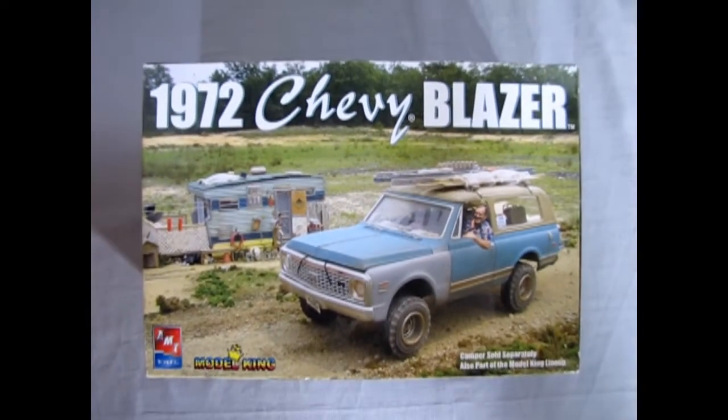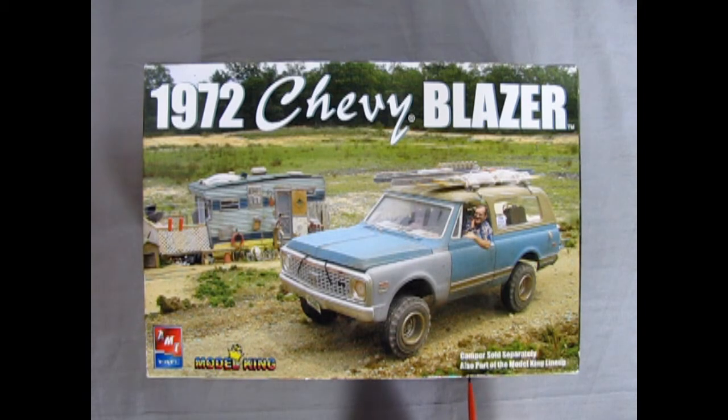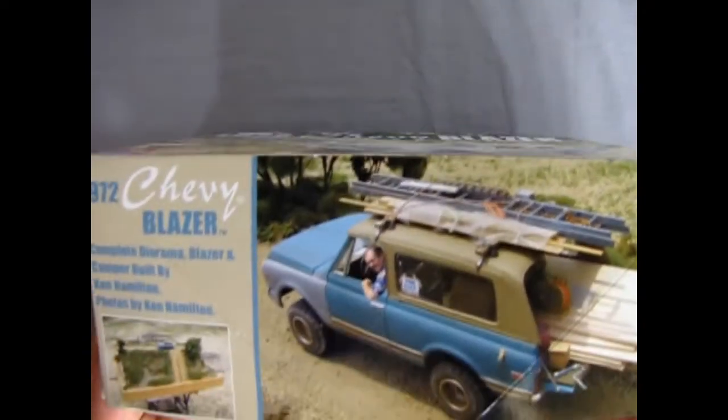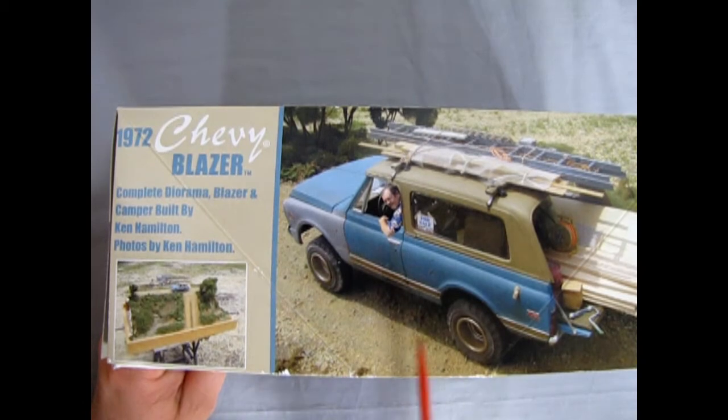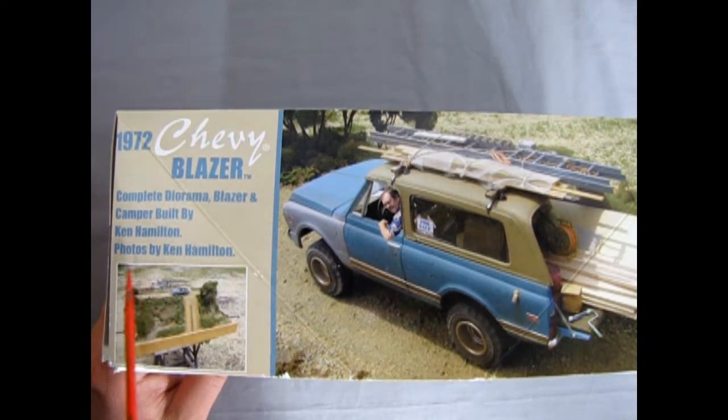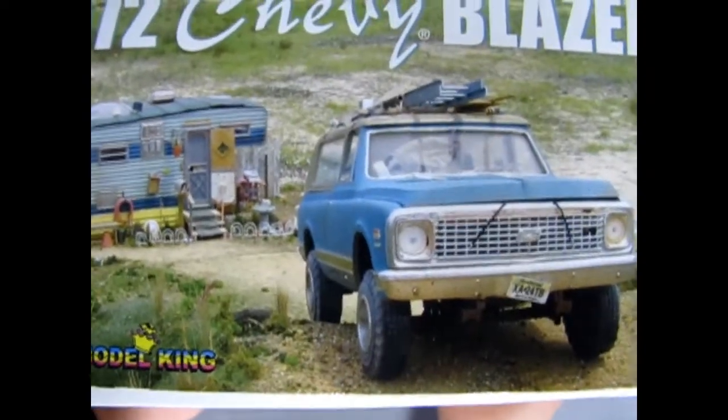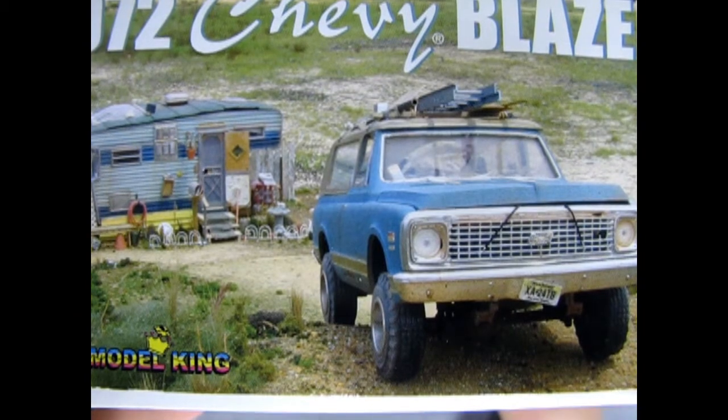Once again, we return to our back roads of this great country where we get to check out our 1972 Chevy Blazer by AMT Ertl released under the Model King moniker. Here we have a picture of this camper in the back. It says on the box that camper was sold separately, also part of the Model King lineup. So if we turn it up on the side, we've got a real person integrated into a model kit. Complete diorama blazer and camper built by Ken Hamilton. Photos by Ken Hamilton. Here's an idea of sort of what you could make, given the right amount of stuff.